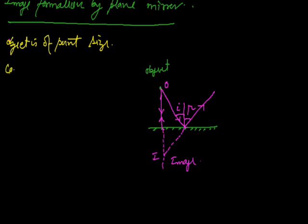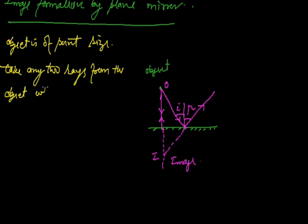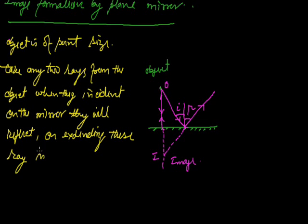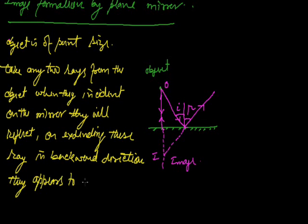Taking any rays from the object, when the incident rays hit the mirror, they reflect. On extending these rays in the backward direction, they appear to meet at point I. They appear to meet at point I, and this will be the image at point I.